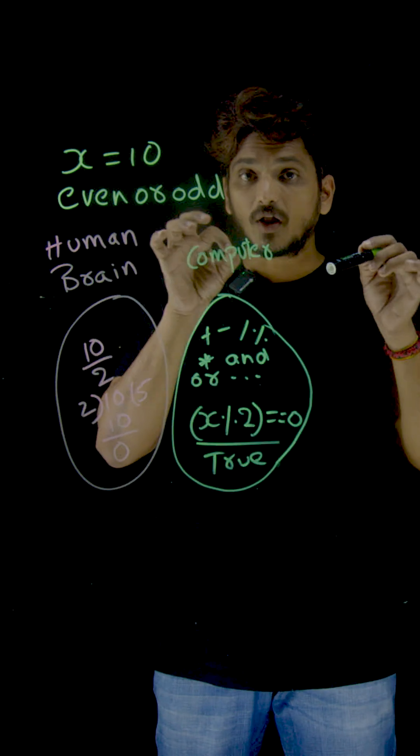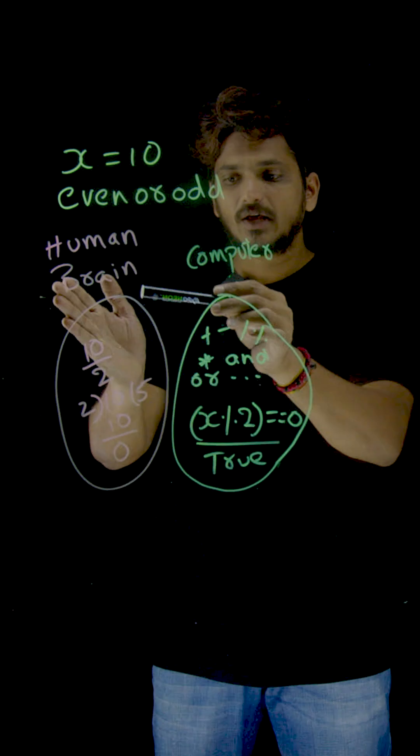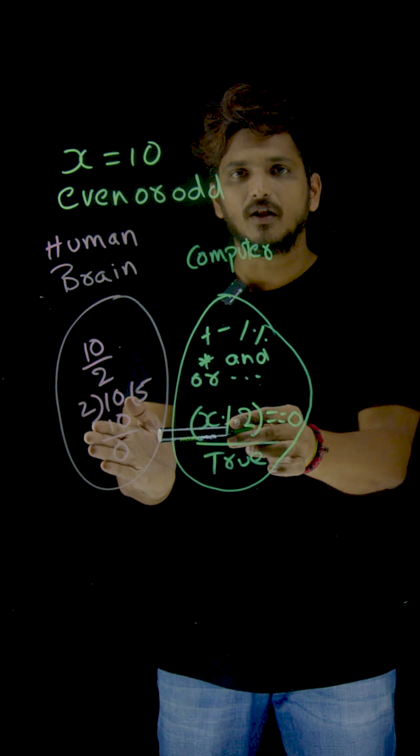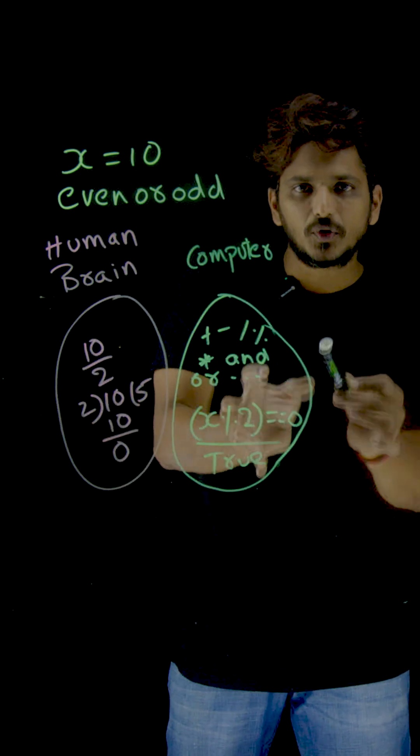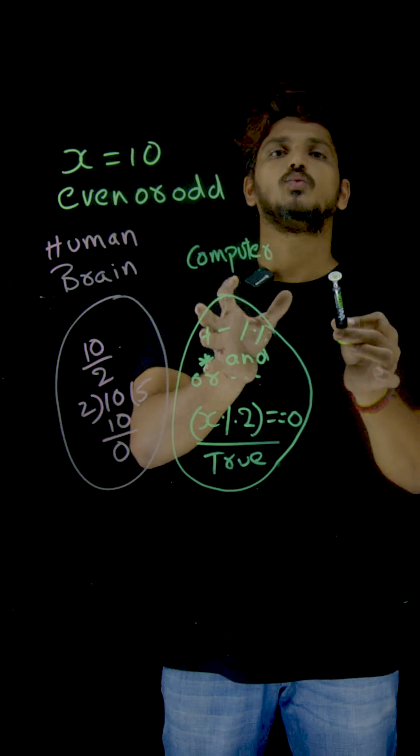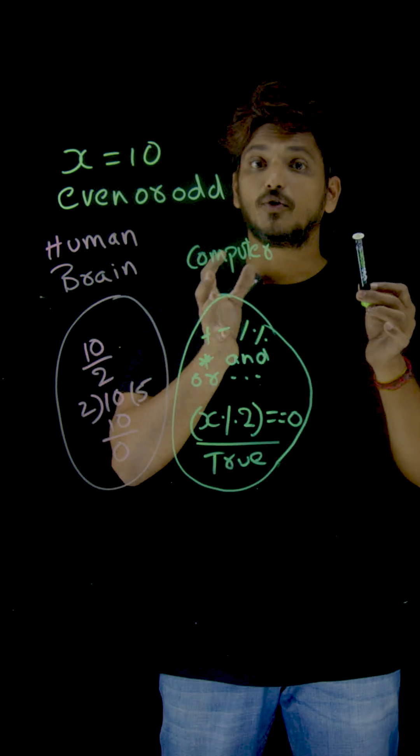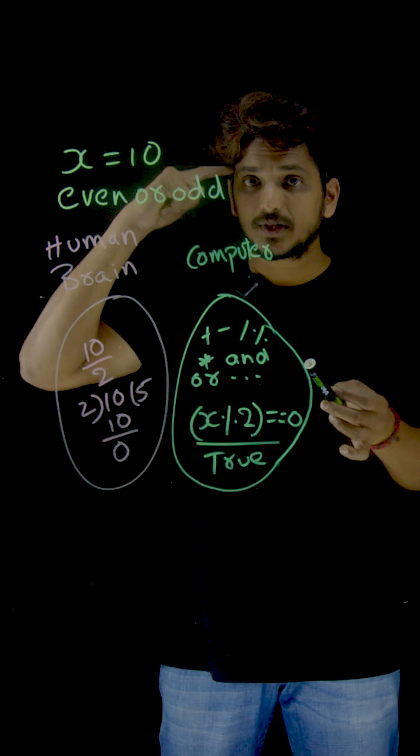So from now onwards, whatever calculations you do in your brain, if you put the same thing in the computer, that is what coding is. Whatever operations you do in your brain, try to put the same thing in the computer. That is what coding is.